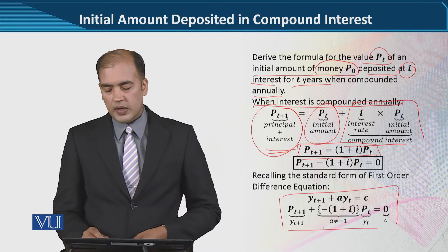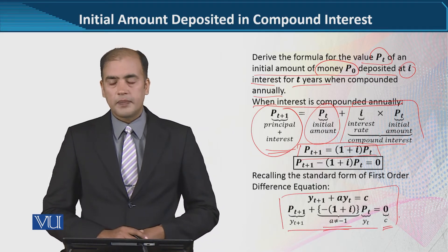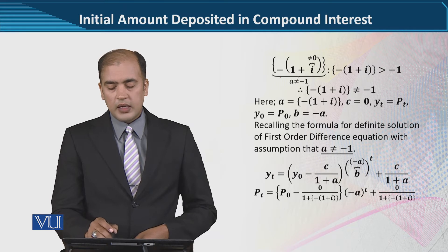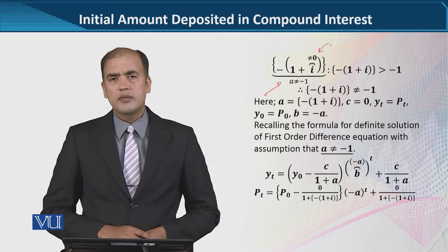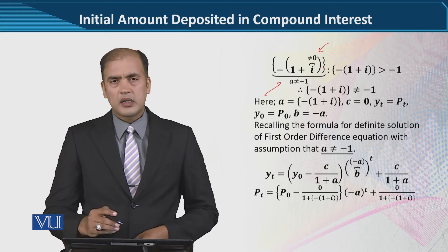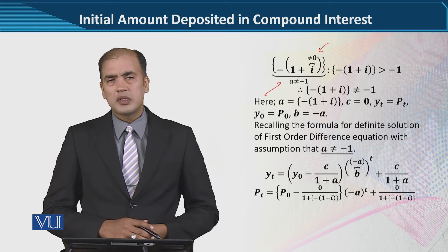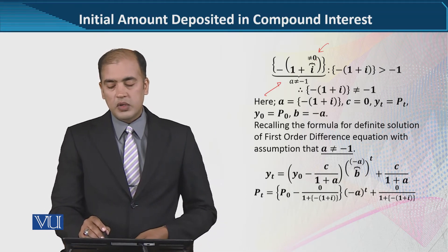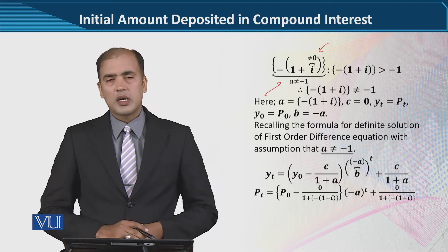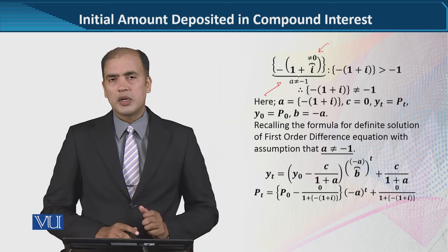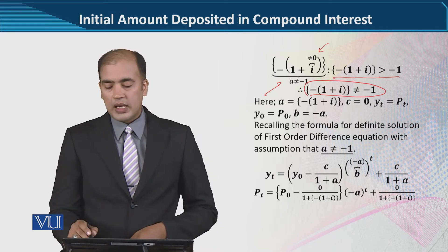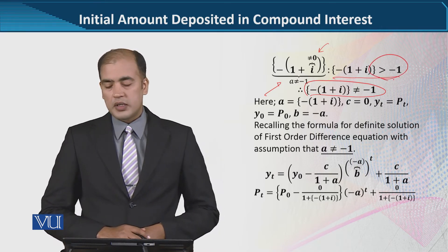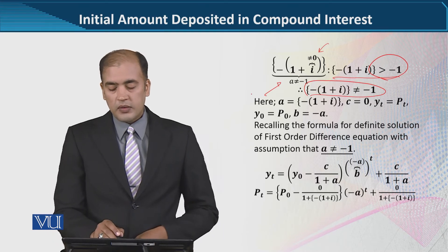We have set up a value where the value of 'a' is not equal to minus 1. The evidence for this is that the value of 'a' is 1 plus i, within the bracket, and i is the interest rate which is never negative or zero — there is always a positive reward in the form of interest. So when we add any positive value to 1, it won't remain 1, and the negative sign cannot make it equal to minus 1. That is why this term is not equal to minus 1; it is going to be greater than minus 1.